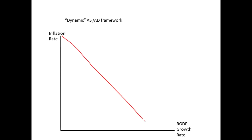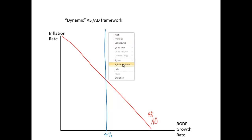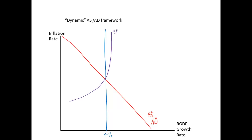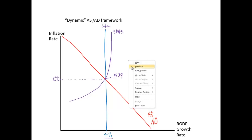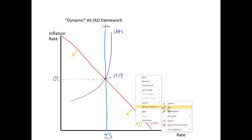Let's put this into our dynamic aggregate supply and demand framework. We start in 1929 where everything's fine — aggregate demand growth of about 4%, long-run aggregate supply here, a strong growth rate of 4%, zero inflation. Towards the end of 1929, a series of aggregate demand shocks begin, starting with the stock market crash as a confidence shock — so aggregate demand starts declining. That's our first shock, which kicks off the investment collapse.